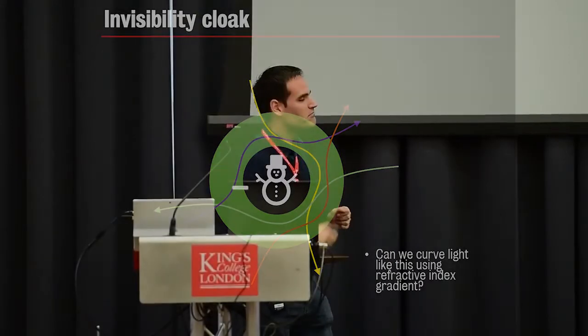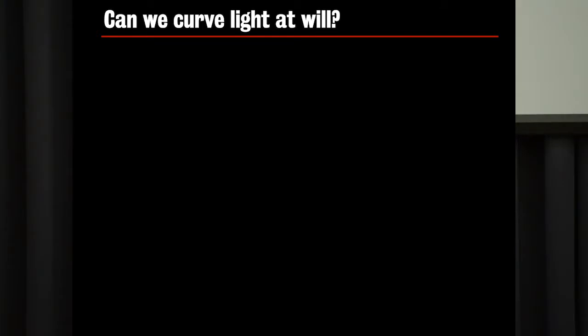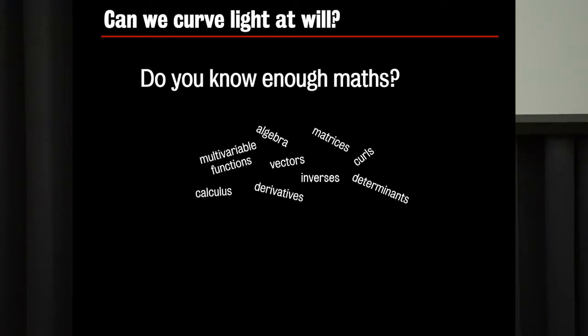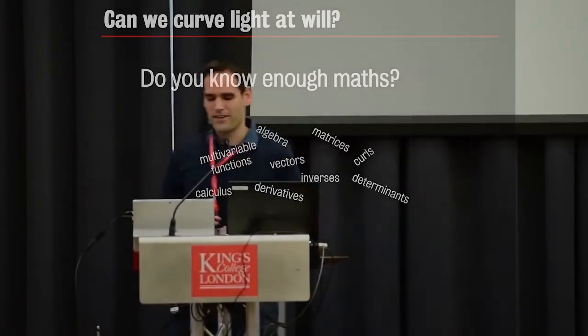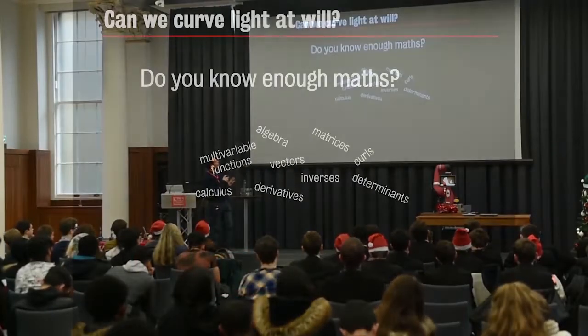The question is can we curve them like this? So this is the question that scientists wanted to answer. Is it possible even theoretically and maybe do an experiment for this? So the question is can we curve light at will? And I changed this question to another version. Do you know enough maths to do this? So right now I know you are a GCSE and A-level student. So the answer would be you don't yet have enough maths. You need to do functions with several variables. You need to know a lot of algebra, calculus, derivatives, lots of vectors, inverses, determinants. Many of these words you know. But you have to be very comfortable with this. And I'm going to show slides that I show to my physics students. But I don't expect you to understand them. So they will go very fast. But just don't be worried.